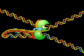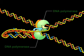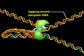In a replication fork, two DNA polymerases collaborate to copy the leading strand template and the lagging strand template DNA.